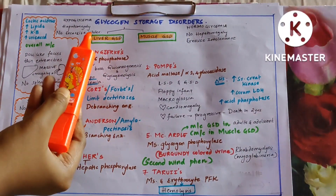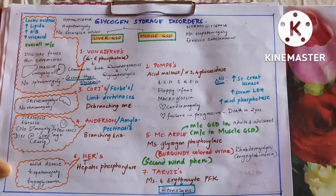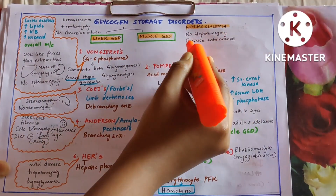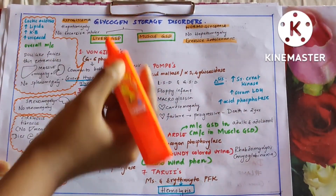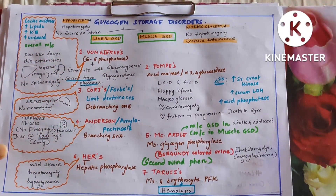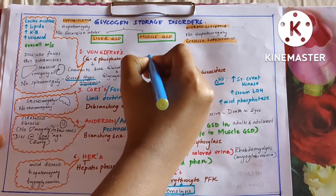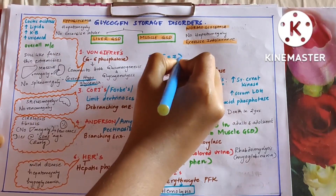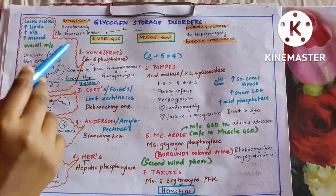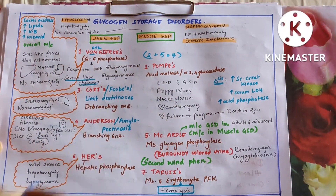Now let us discuss glycogen storage disorders, divided into liver GSD and muscle GSD. Liver GSD presents commonly with hypoglycemia and hepatomegaly but no exercise intolerance, whereas muscle GSD presents with exercise intolerance and normal glycemia. In muscle GSD, types 2 + 5 = 7: Pompe's, McArdle's, and Tarui's are on the muscle side. Types 1, 3, 4, and 6 are liver GSDs.